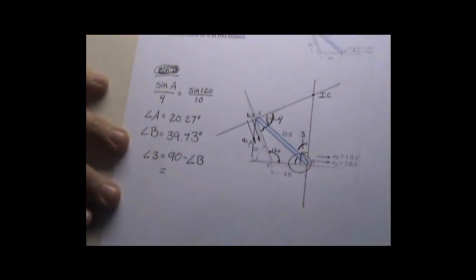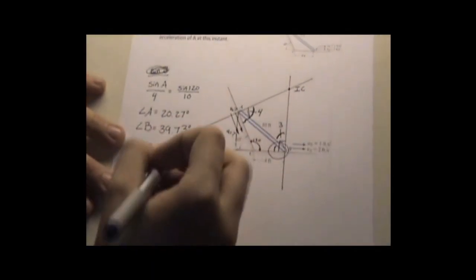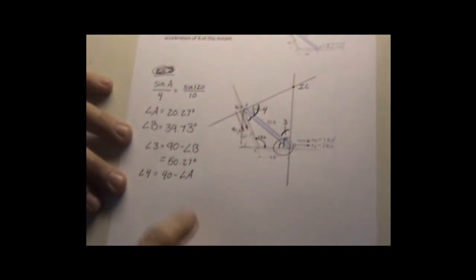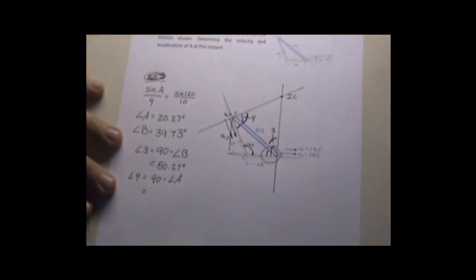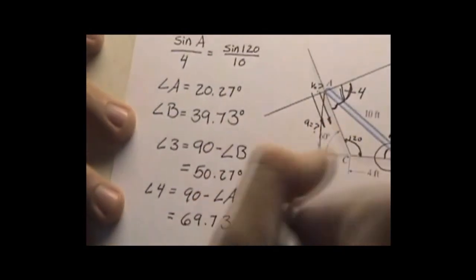which that equals 50.27 degrees for this right here. Angle 4, on the other hand, equals 90 minus angle A, right here. That also equals 90 minus 20.27, 69.73 degrees.